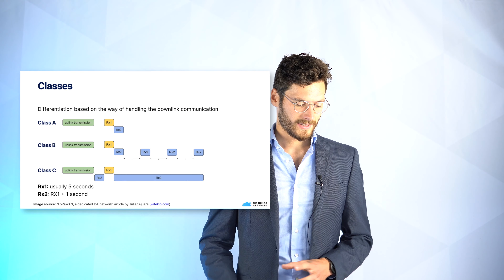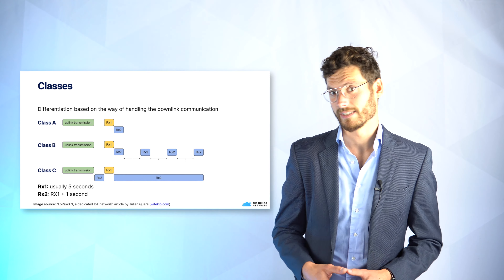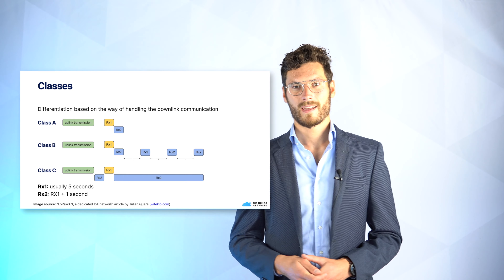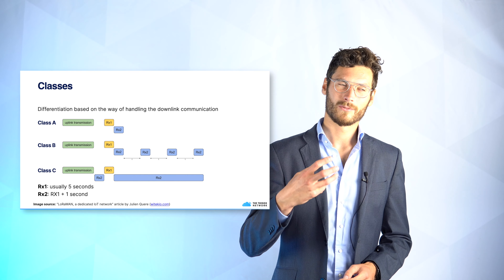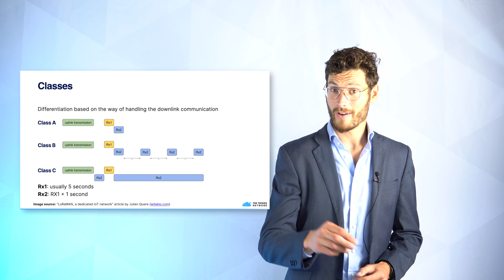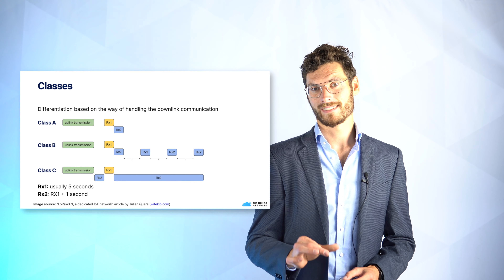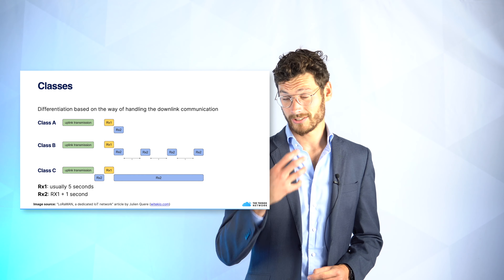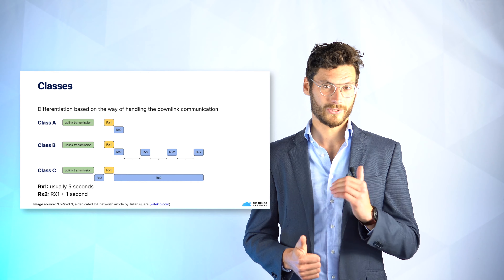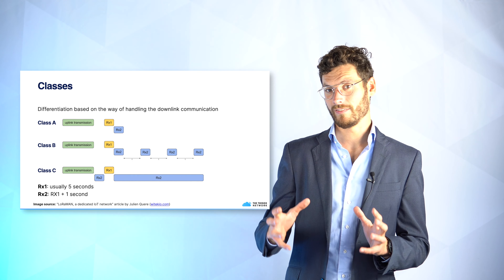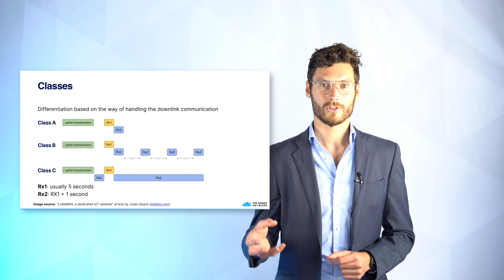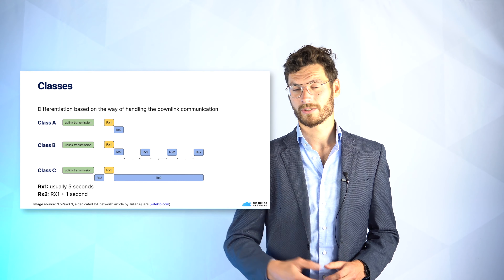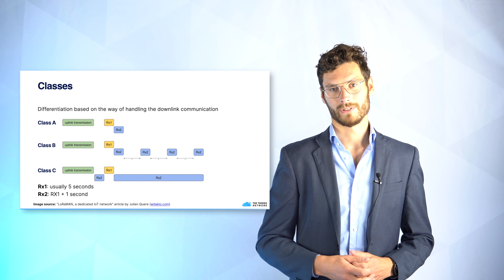Devices can operate in different classes. Class A is the class all devices must support. In Class A, the device always initiates the communication — it starts with an uplink transmission, and once finished, it opens two receive window slots: RX1 and RX2, allowing the network server to send a message back.